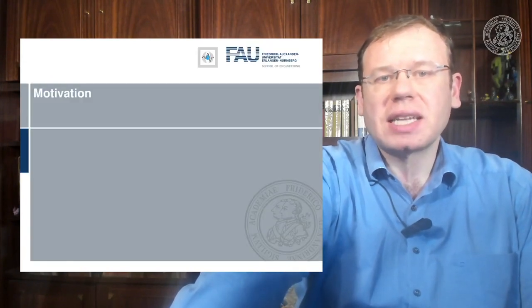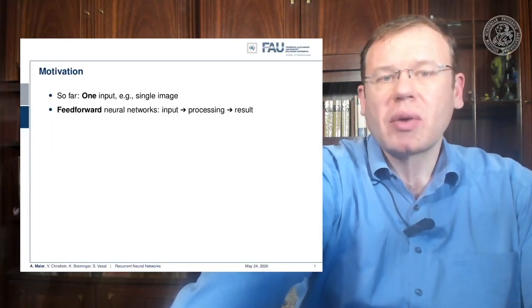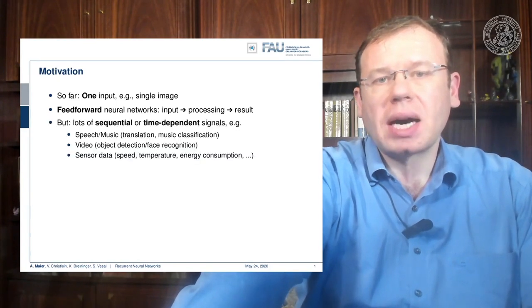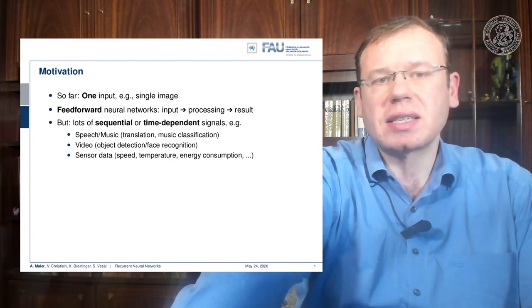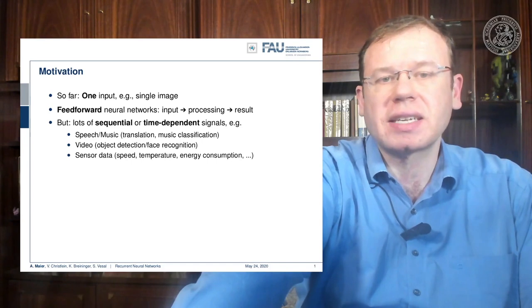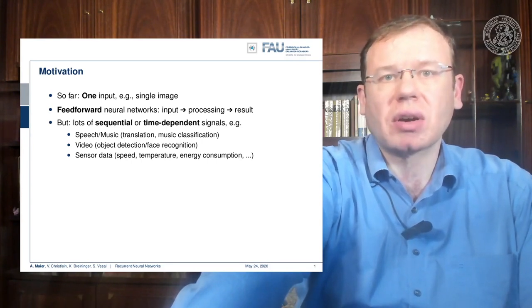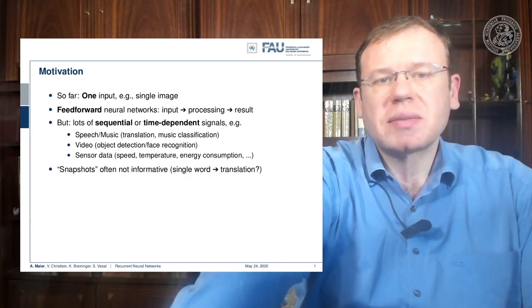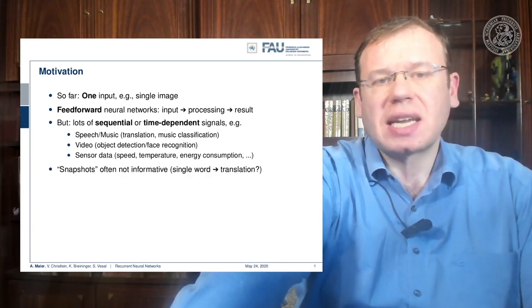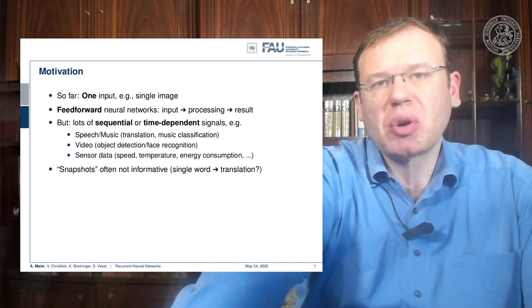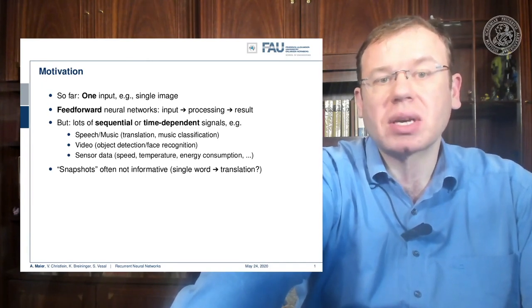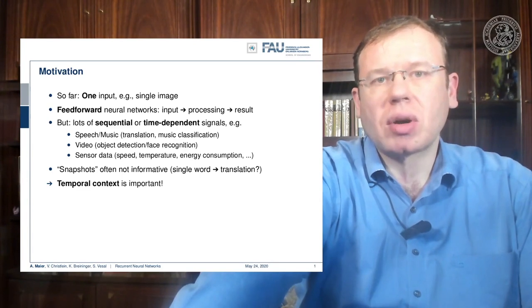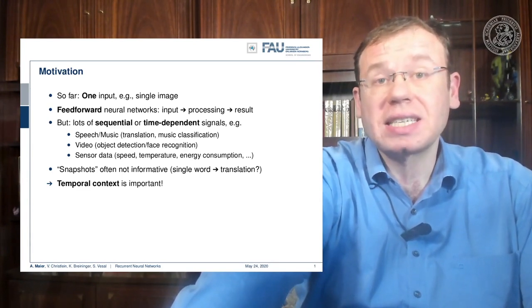Okay, so let's look at the motivation. Well, we had one input for one single image, but this is not so great for sequential or time-dependent signals such as speech and music, video, or other sensor data where you could even talk about very simple sensors that measured energy consumption. So these snapshots with a fixed length are often not that informative. So if you look at a single word, you probably have trouble getting the right translation because the context is missing. And temporal context is really important and needs to be modeled appropriately.